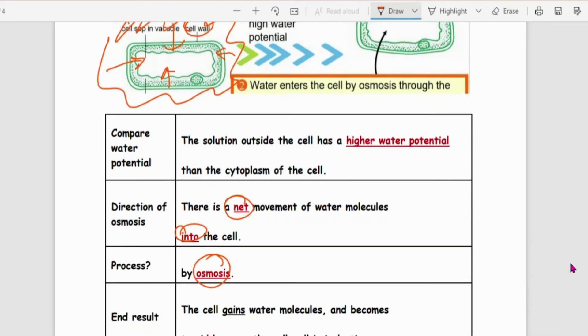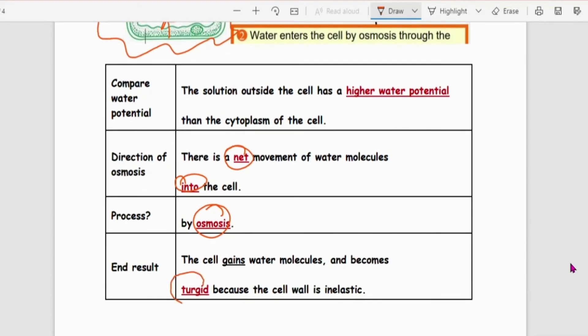So since we know the cell gains water, it will become what we call turgid. Sometimes the word used is also swell. Now why it doesn't burst? Because the cell wall is inelastic, it will actually hold the cell in structure.